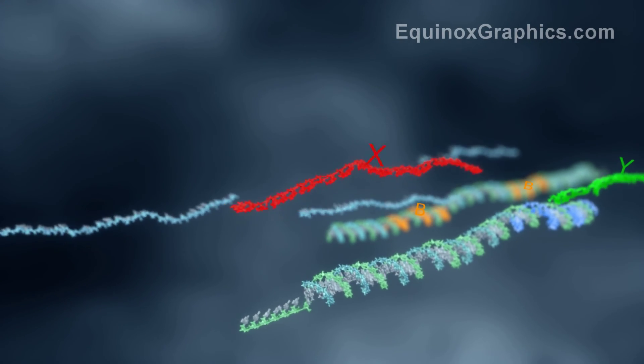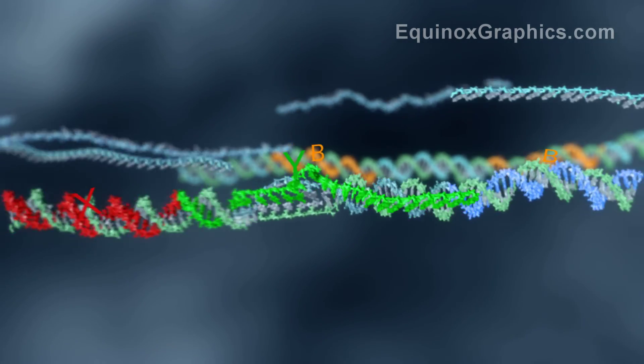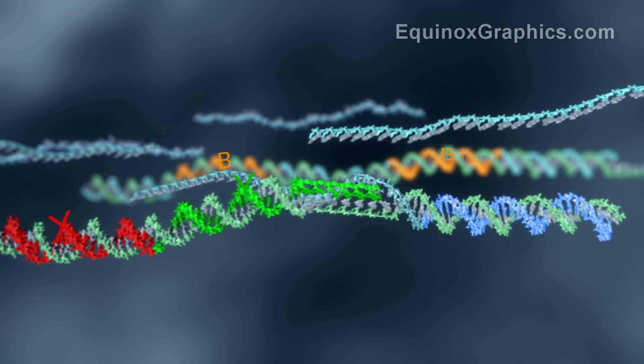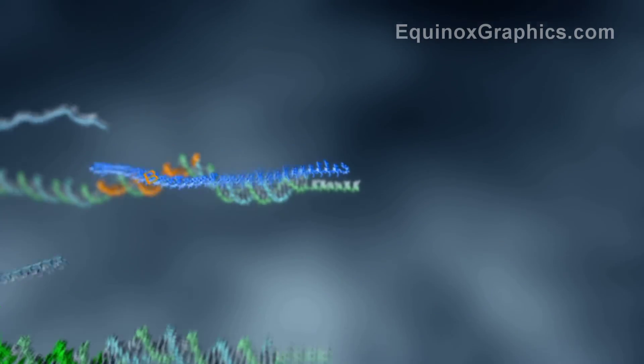We see the functioning of the consensus circuit where X and Y quickly cancel each other out to produce the intermediate B, which is then converted to the majority. The result of this simulation is in agreement with experimental data.